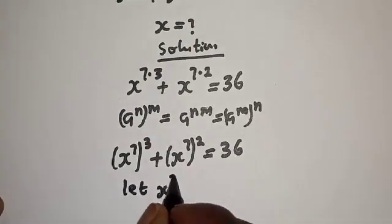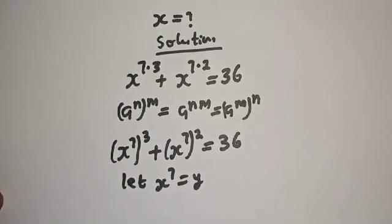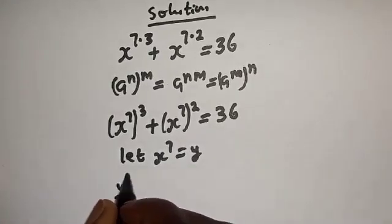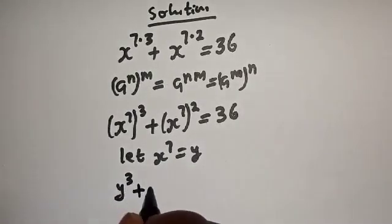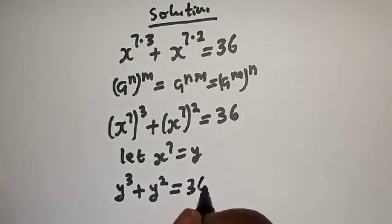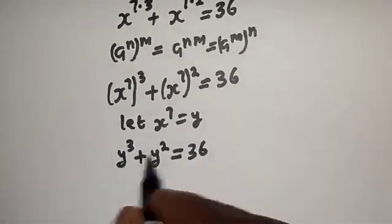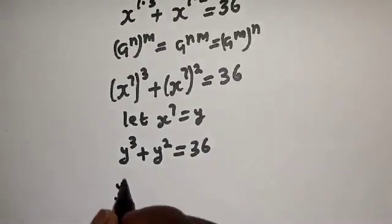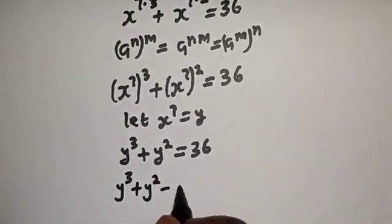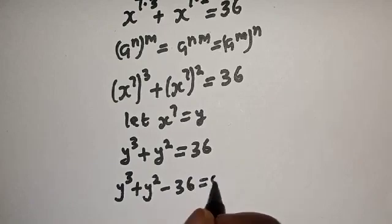Let x raised to power 7 equal y. Then this becomes y raised to power 3 plus y squared is equal to 36. Bringing everything to one side: y raised to power 3 plus y squared minus 36 is equal to 0.